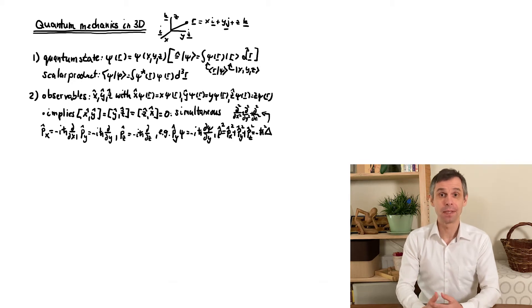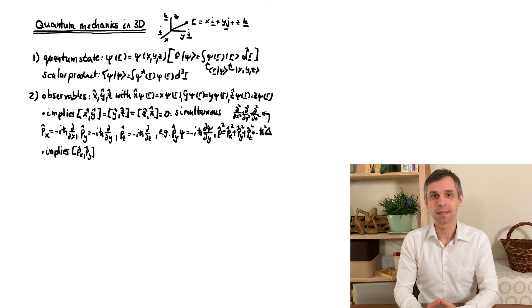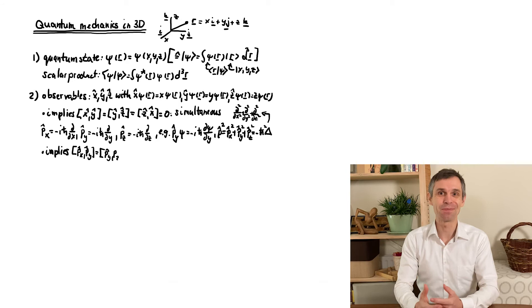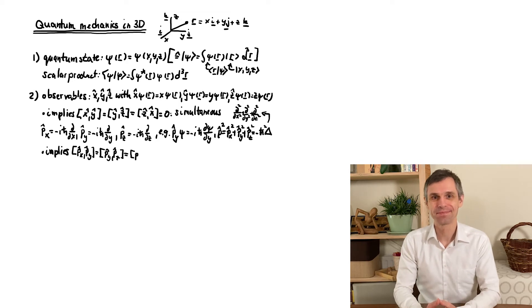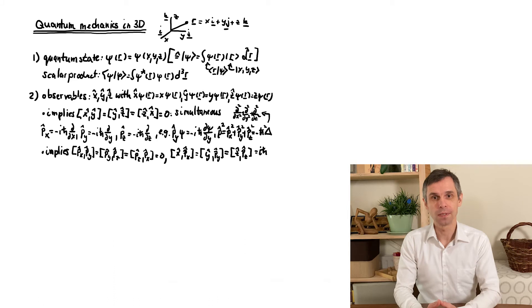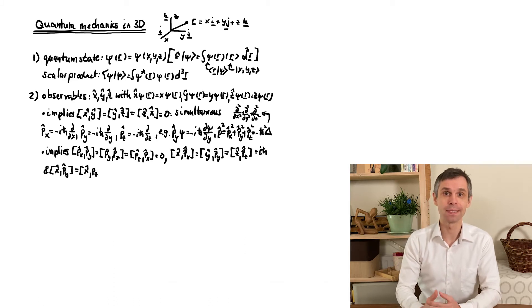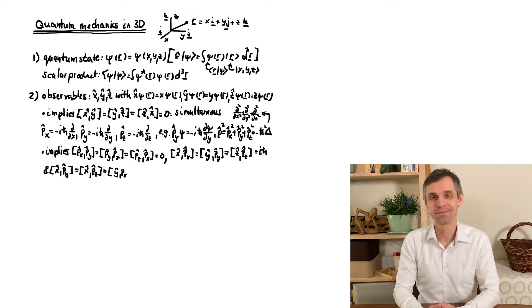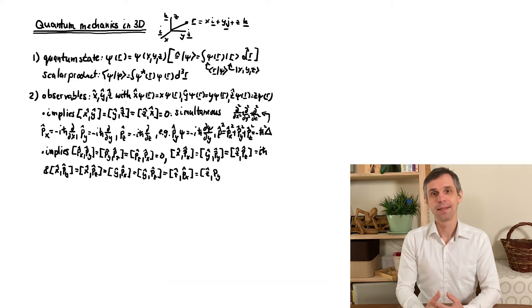Now, mathematically, we know that the order of partial derivatives does not matter. And that again implies that the three momenta are simultaneous observables. We will come back to this very soon. Now, comparing positions and momenta, the only commutators that do not vanish are those between a position and a momentum involving the same coordinate.